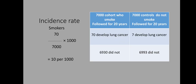Let us look at a hypothetical example of how to estimate the incidence rate in cohort studies. Those who have not seen our previous video on incidence and prevalence should see that first — the link will be in the description. In this example, 7,000 people who are smokers and do not have lung carcinoma are selected as the cohort.